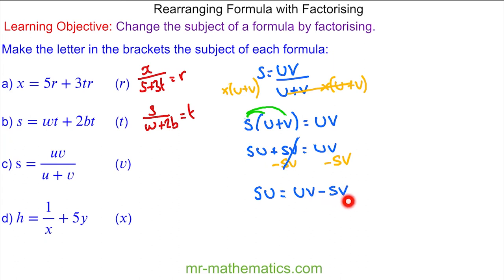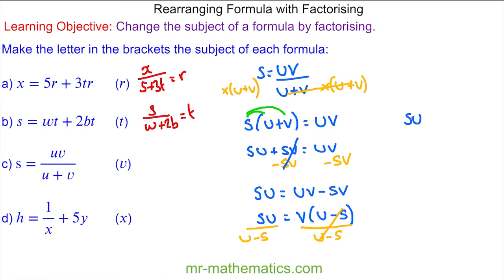We have su is equal to uv minus sv. Now we're going to factorise the right hand side to make v on its own, so su is equal to v lots of u minus s. We'll divide both sides by u minus s — these will cancel — so su divided by u minus s is equal to v.